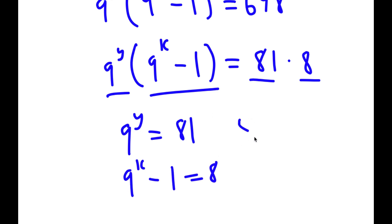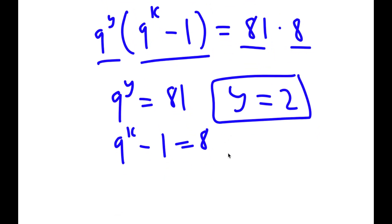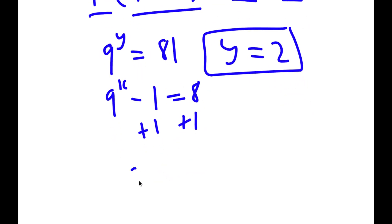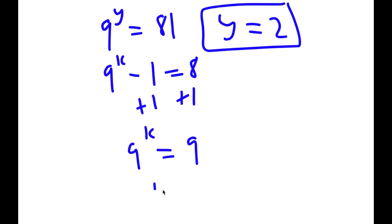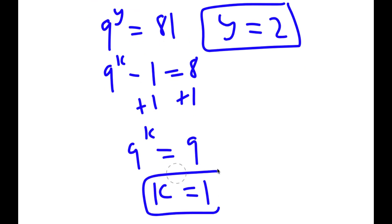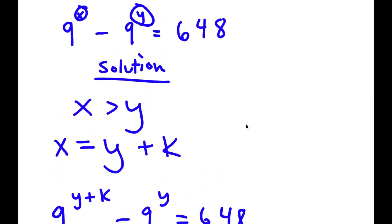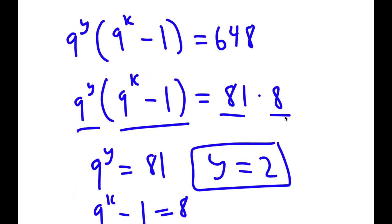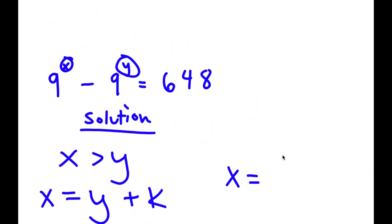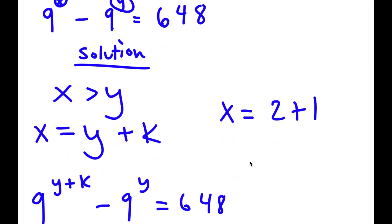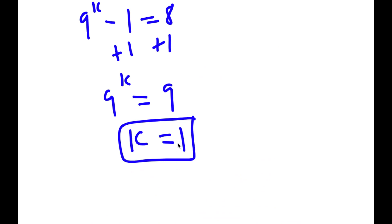For 9 to the power of y equals 81, y is simply 2. For 9 to the power of k minus 1 equals 8, I add 1 on both sides to get 9 to the power of k equals 9, meaning k equals 1. Now that we have y and k, and x equals y plus k, we get x equals 2 plus 1, so x equals 3. Therefore x equals 3, y equals 2, and k equals 1.